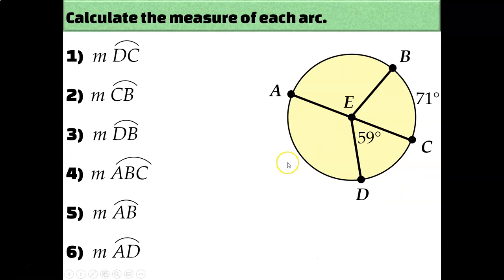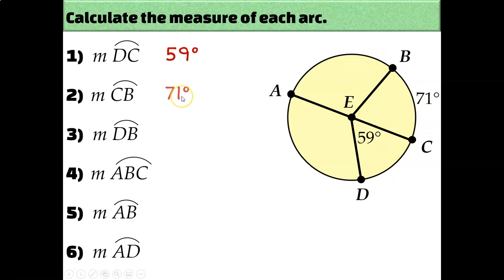Let's use the arc addition postulate with this diagram. Some labels indicate arcs and some indicate angles, but central angles equal the measure of the arc they intercept. Arc DC must be 59 degrees because angle DEC is 59 degrees. Arc CB is already labeled as 71 degrees. Using arc addition, arc DB equals arc DC plus arc CB — 59 plus 71 — so arc DB is 130 degrees.